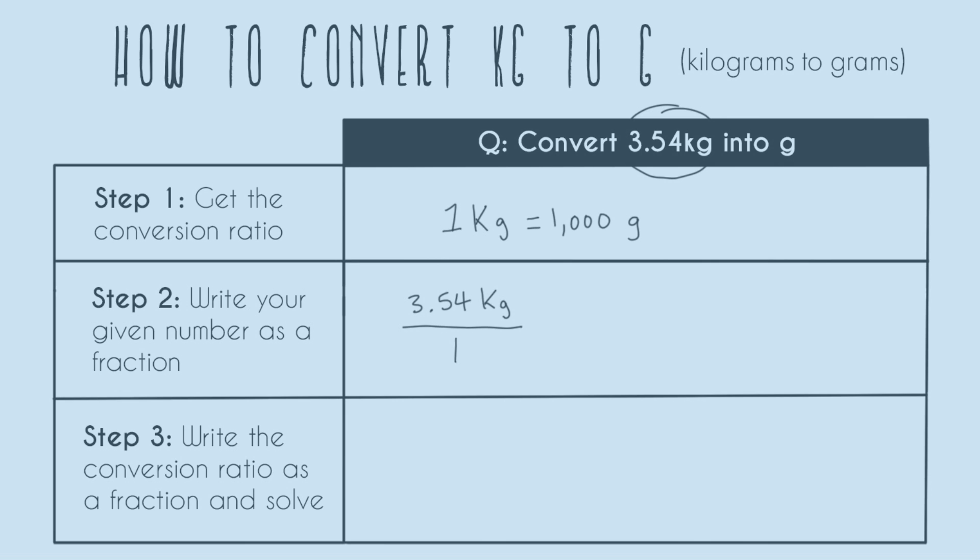So this is going to work for really small decimals. Any type of number can be turned into a fraction with a denominator of one, and very important, make sure that your units are also in the numerator.